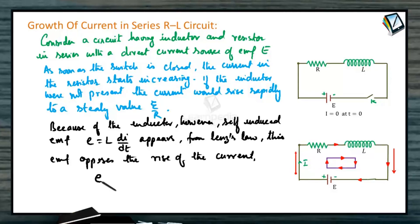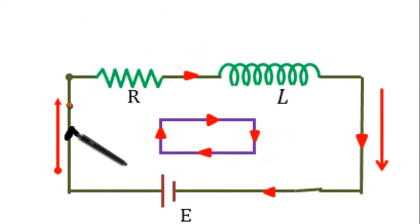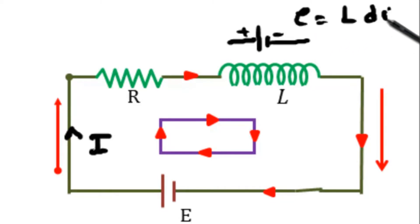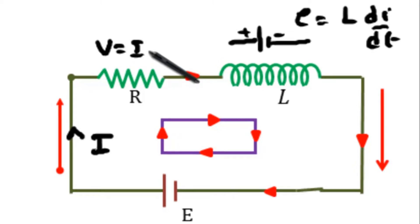Therefore, a net EMF in the circuit will be the actual EMF external E minus the EMF generated across the inductor, L di by dt. Di by dt is the rate at which the current is changing. When the switch is closed, there will be an induced EMF: E equals L di by dt. And across the resistor, the potential drop is I into R.